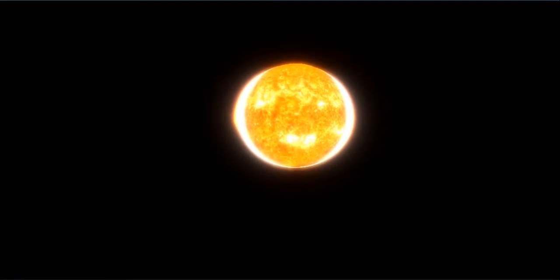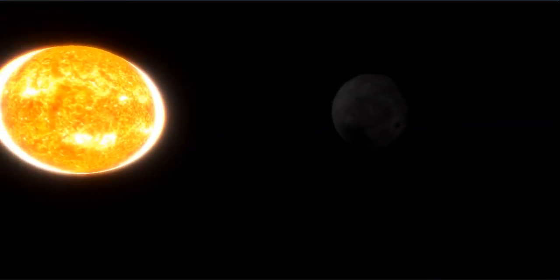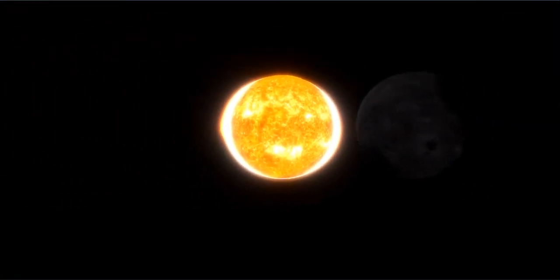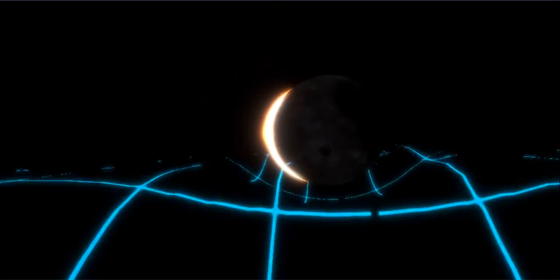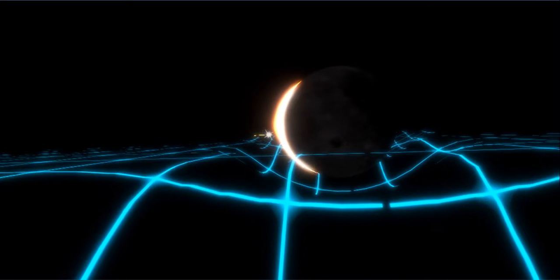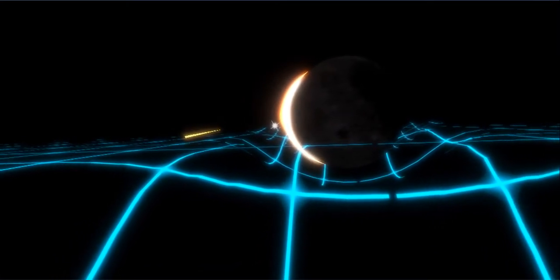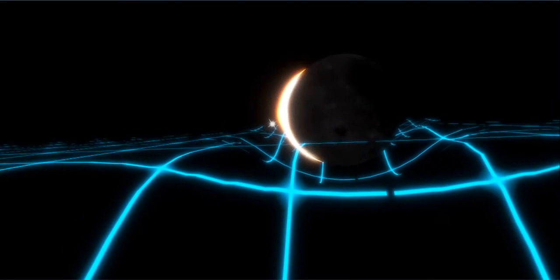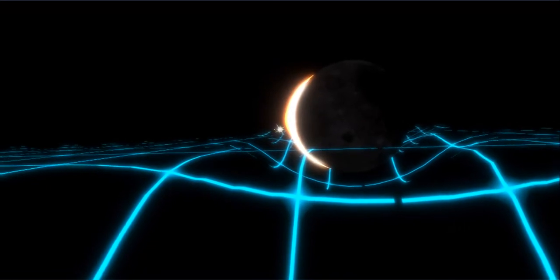By observations during a total solar eclipse, at the moment when the moon completely covered the sun, the effects of the curvature of space had been seen by astronomers. According to Einstein, the sun's enormous mass noticeably deforms space, so that light from distant stars should be slightly bent as it travels close to the sun.